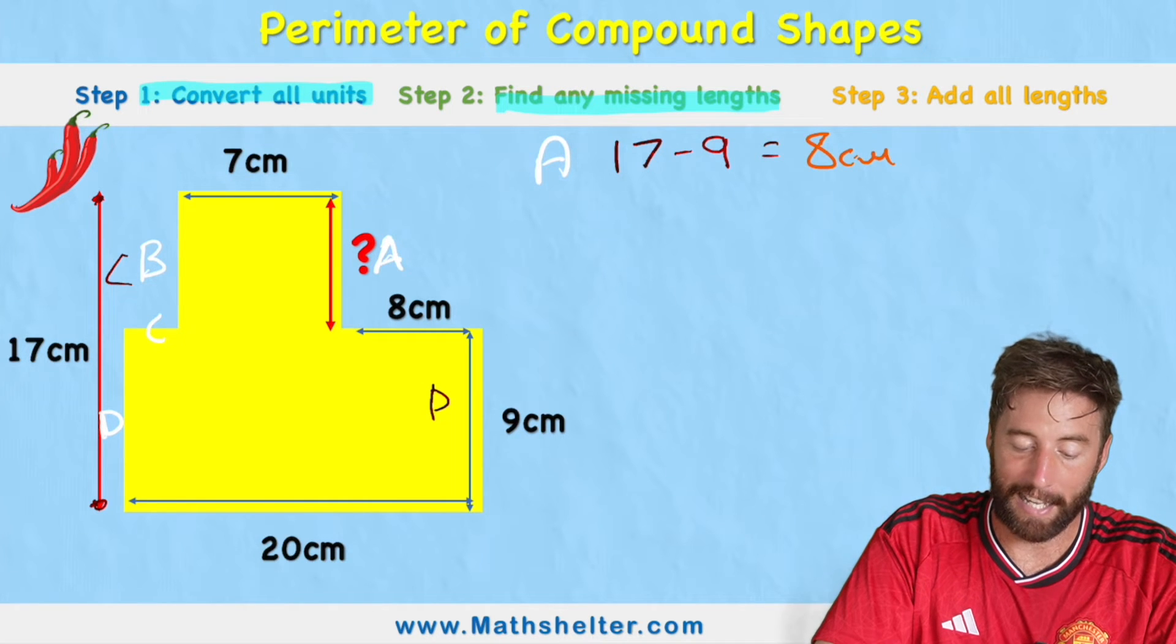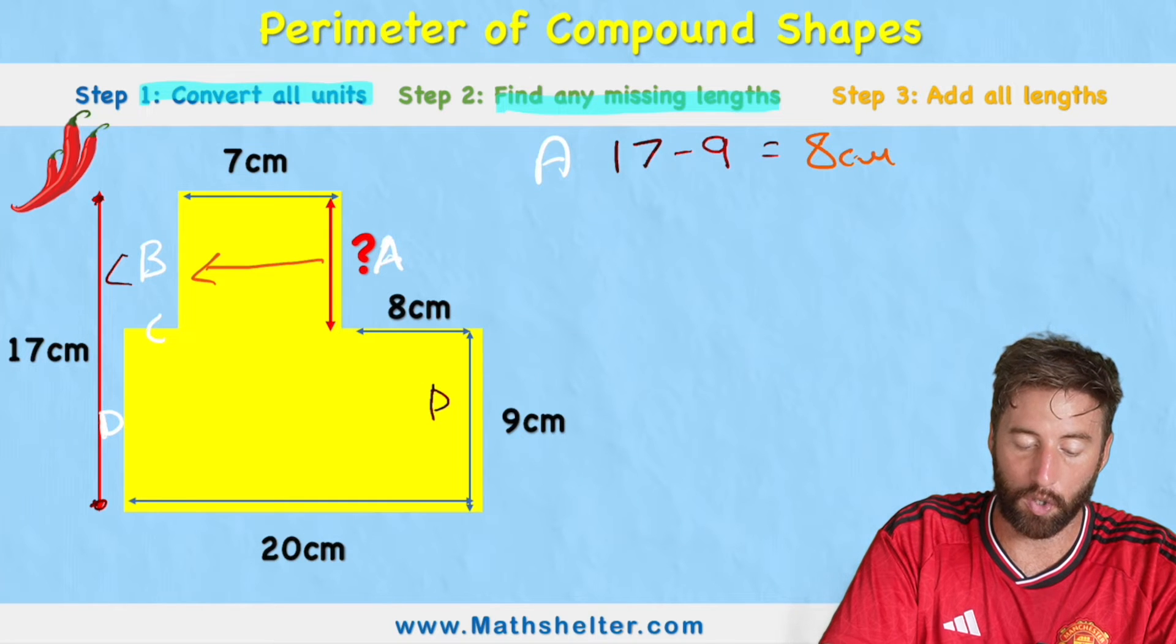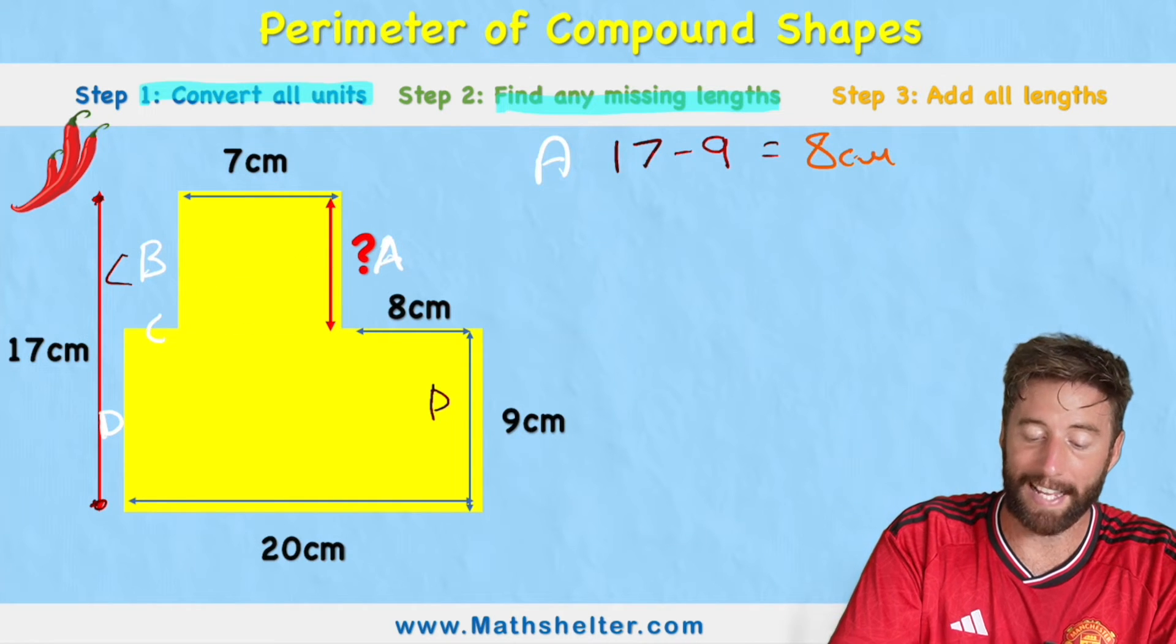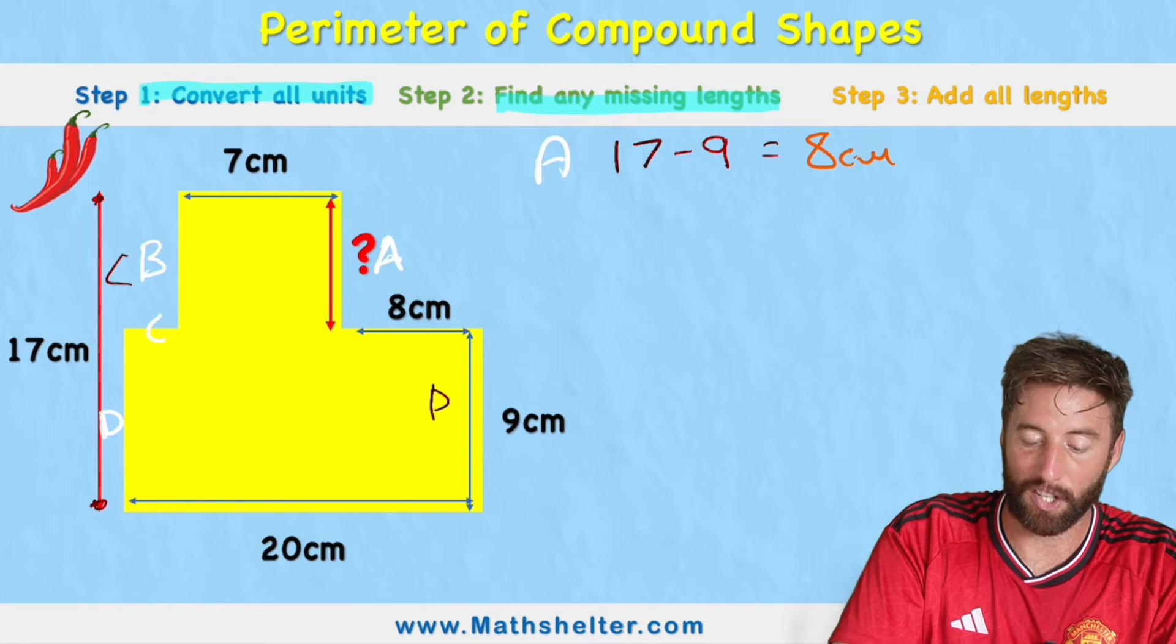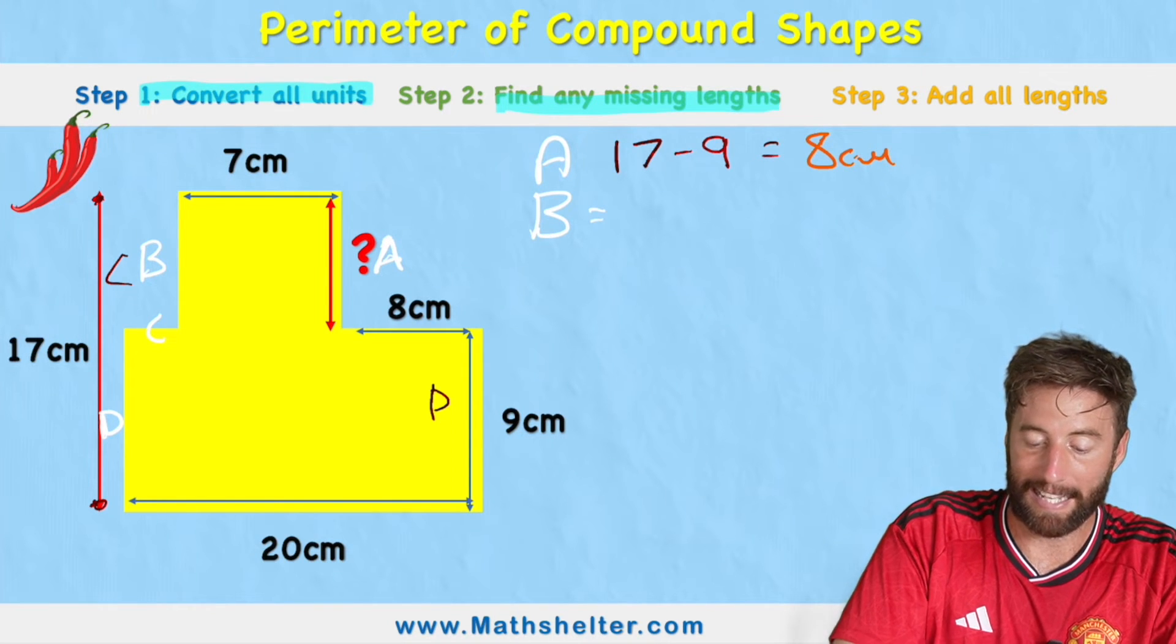So if A is 8 centimeters, we can see the opposite will be the same because we've got this square at the top. So if A is 8, then actually B must equal 8 as well.